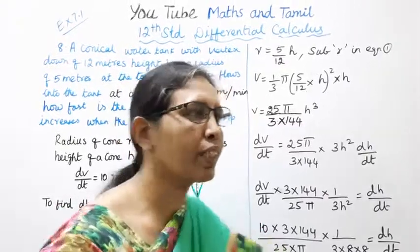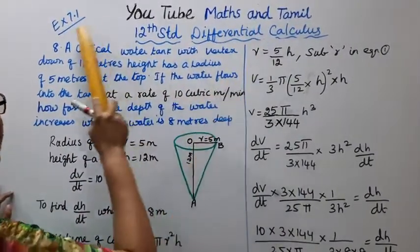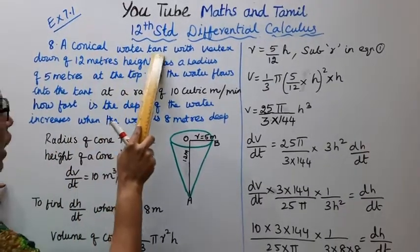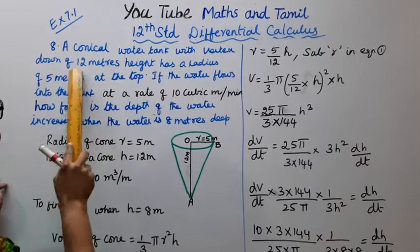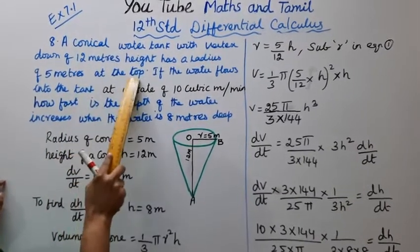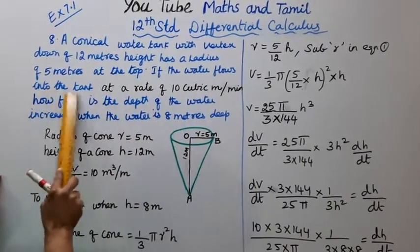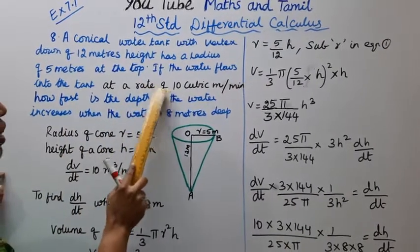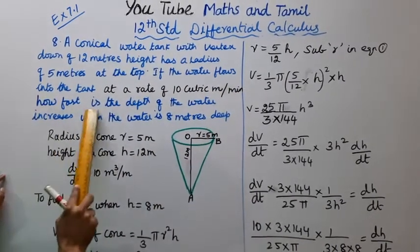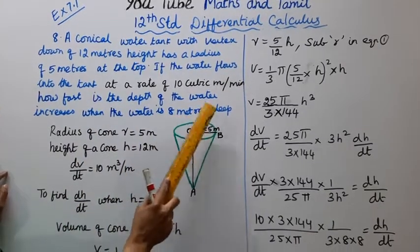Hello students, welcome to Max and Tremit channel. This is Exercise 7.18, Sum A: a conical water tank with vertex down, 12 meters high, has a radius of 5 meters at the top. If the water flows into the tank at a rate of 10 cubic meters per minute, how fast is the depth of the water increasing when the water is 8 meters deep?